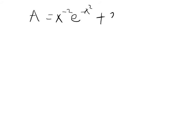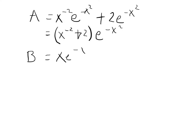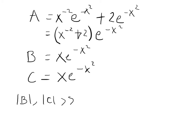A is equal to y prime, which is x to the minus 2 e to the minus x squared plus 2 e to the minus x squared — which can also be written as e to the minus x squared times the quantity 1 over x squared plus 2. B equals C, which is x e to the minus x squared. And C is also x e to the minus x squared. All three terms share e to the minus x squared, so we look at coefficients. For A we have 1 over x squared plus 2, and at large x the constant 2 dominates. But comparing to B and C, whose coefficient is x, x dominates the constant 2 at large x — so B and C are the dominating terms, resulting in a consistent case.